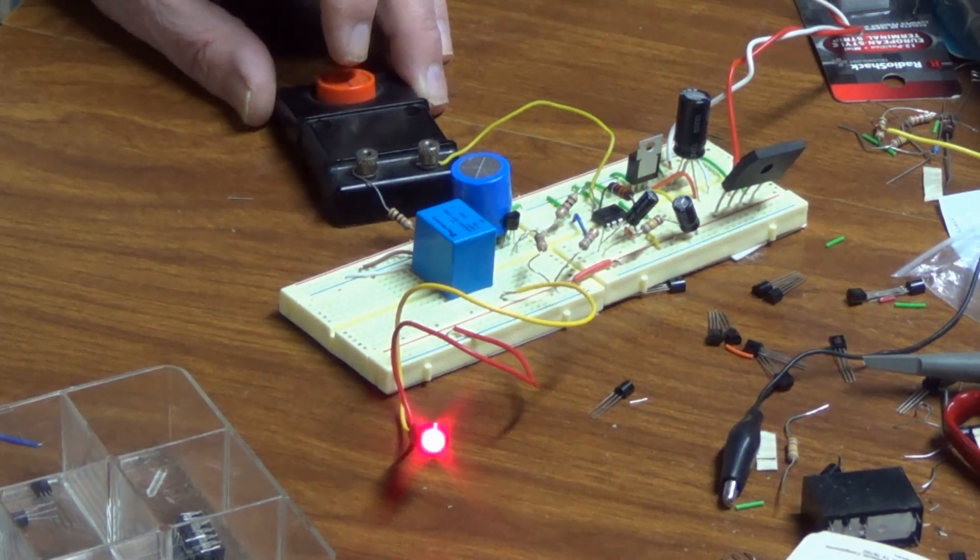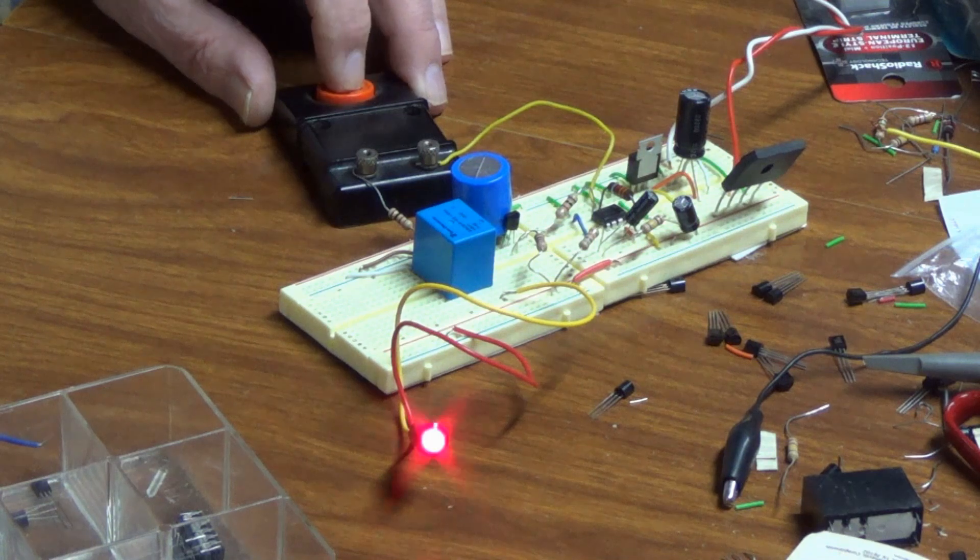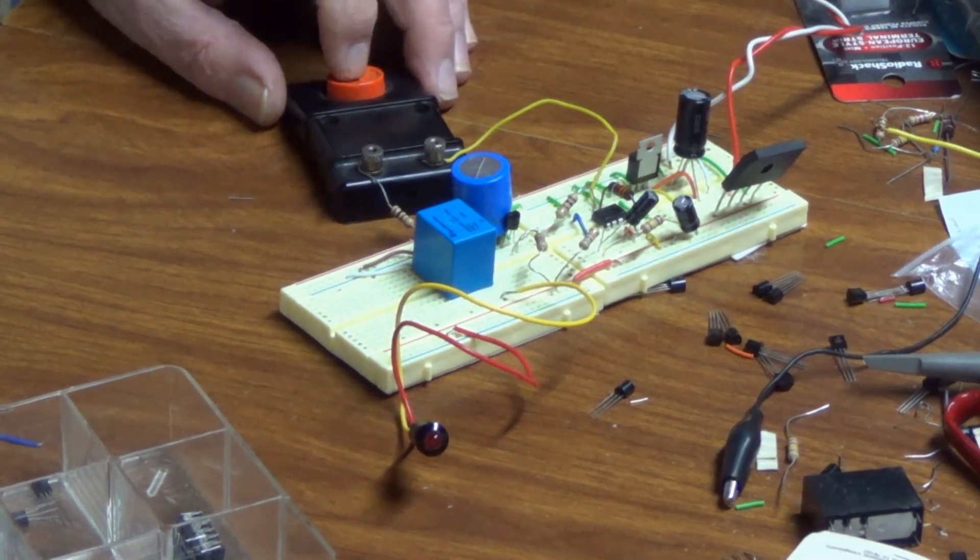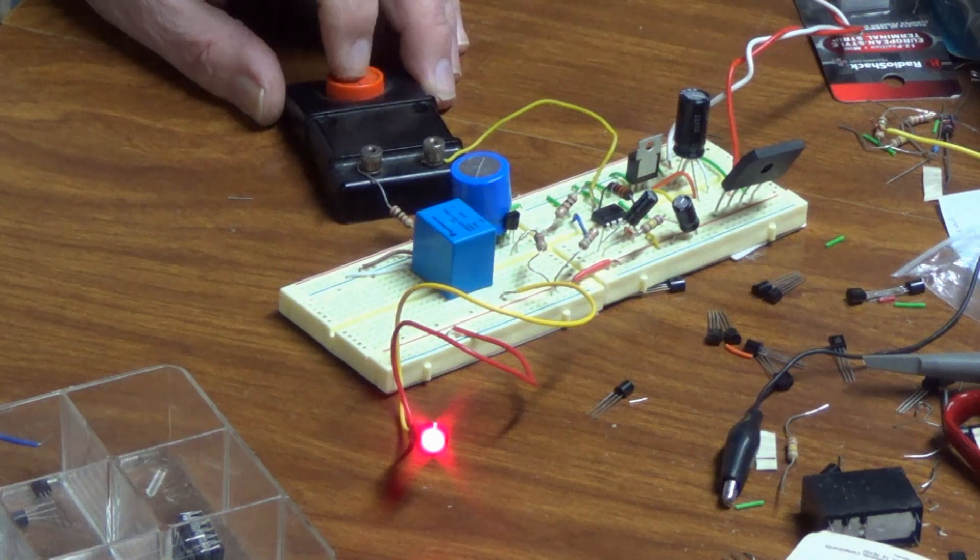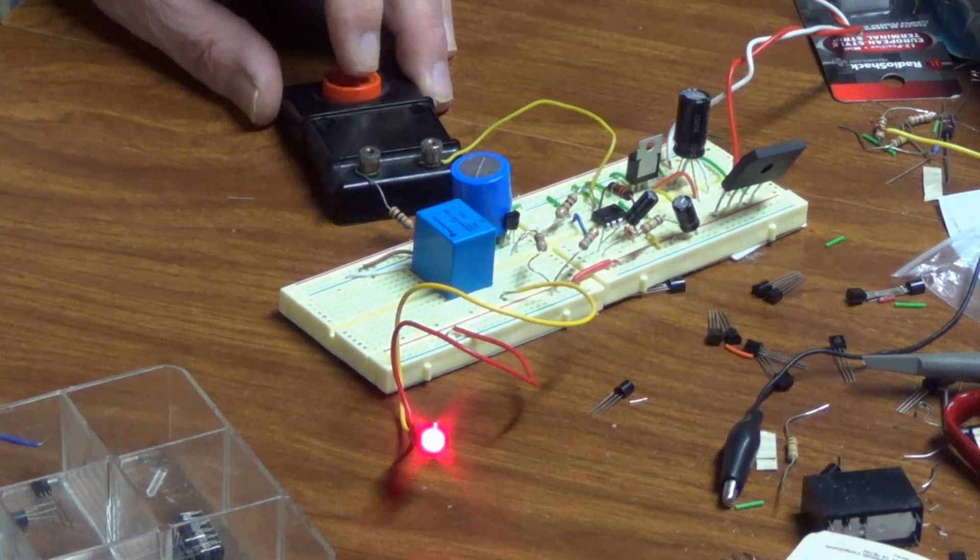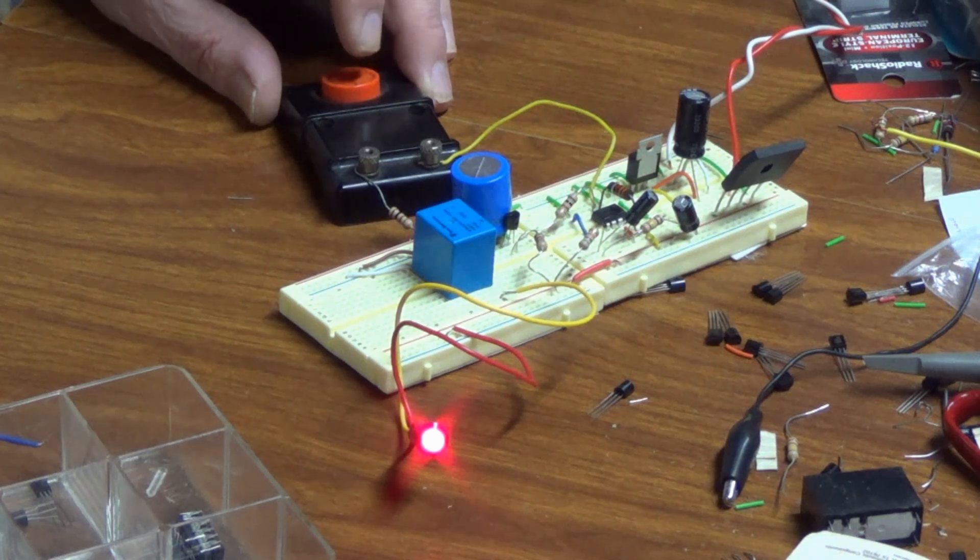Notice that the light stays on for about five seconds after the button is pushed. This is achieved by wiring the 555 timer chip to operate in the basic astable mode.